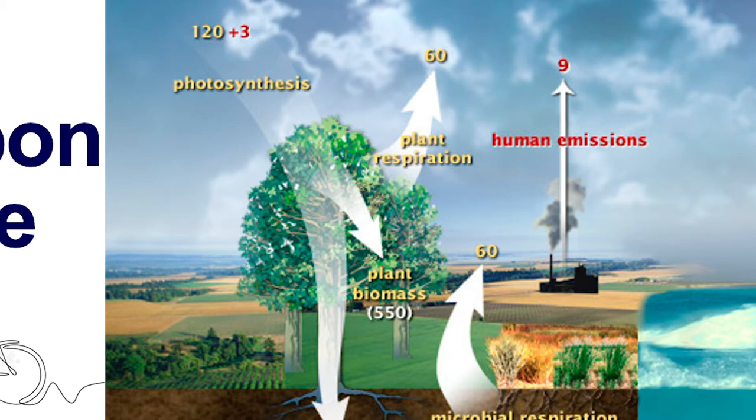The yellow numbers are the fluxes of carbon moving from one pool to another. We've got 800 gigatons of carbon up in the atmosphere, and we're constantly taking carbon out of the atmosphere and putting it back in — not only through our burning of fossil fuels, which is that human emissions in red text at nine gigatons of carbon per year, but also through natural processes.